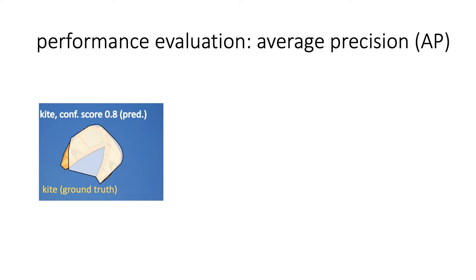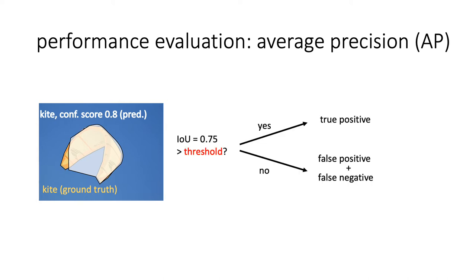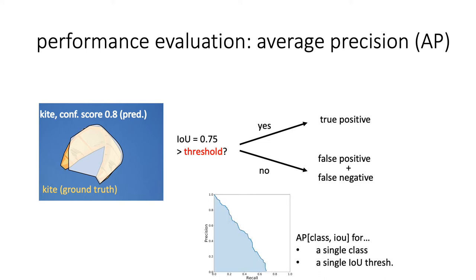Here is a brief explanation of average precision for instance segmentation. Predicted segments are matched to ground truth segments: a pair is a true positive if their IoU exceeds a certain threshold; otherwise they are false positive and false negative. This matching is done greedily starting from the highest confidence prediction. Then, for each class and IoU threshold, we build a precision-recall curve and average precision across different recall thresholds, classes, and IoU thresholds. I recommend the COCO dataset webpage for a detailed explanation of AP calculation.